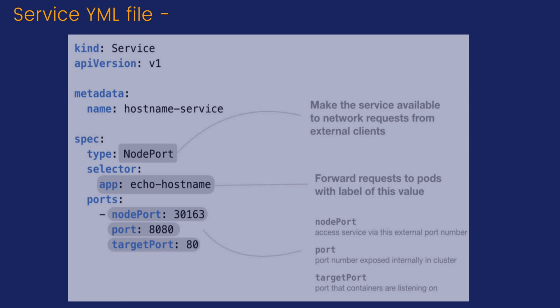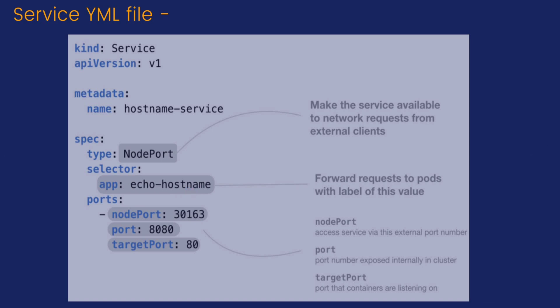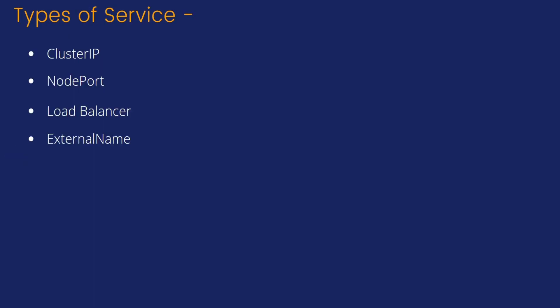The specification contains type, selector, and ports. Type defines what kind of service we are using, depending on the requirement. The selector plays a very major role — with the help of the selector we can acquire pods and create groups, for example app: echo-for-hostname. The third field is ports, where we define the node port to access our application.